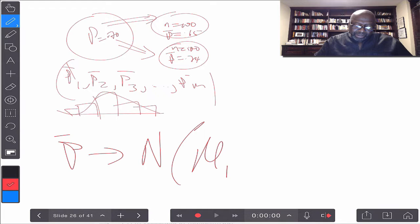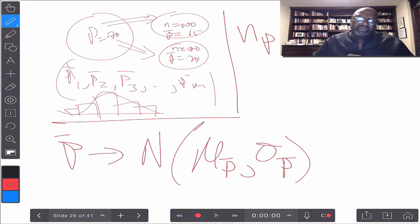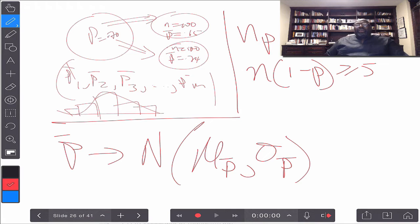Normal, mu P bar, sigma P bar. N meaning normal, and the mean is mu P bar, sigma P bar. But we have a condition that we must satisfy. It turns out that we need the following condition: N times P must be greater than or equal to 5.